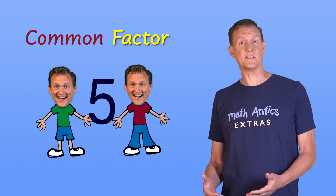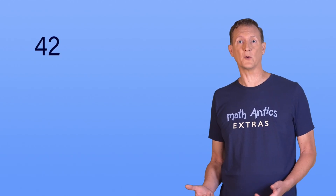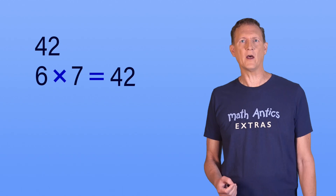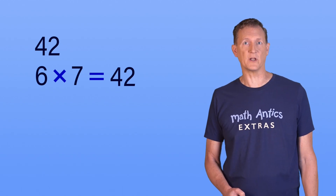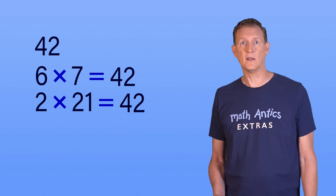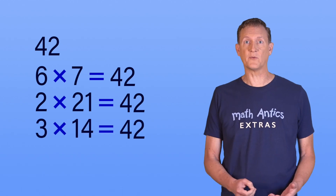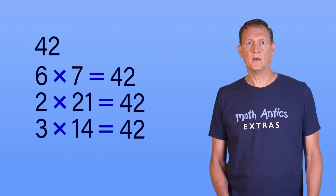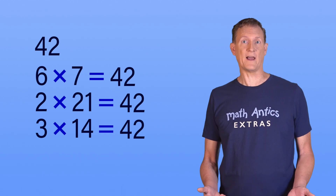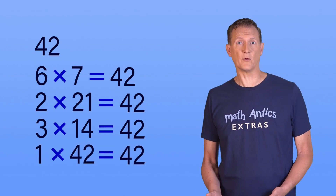To actually see what a common factor is, let's get another number and figure out what its factors are. Let's do that with 42, since we already know that 6 and 7 are factors. What other whole numbers can we multiply to get 42? Well, there's 2 times 21, and 3 times 14 also gives you 42. Besides that, the only factors of 42 are its trivial factors of 1 and 42.